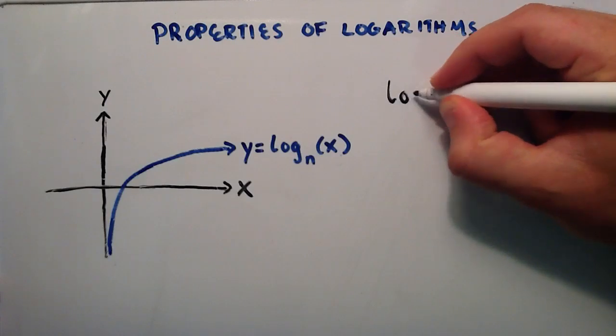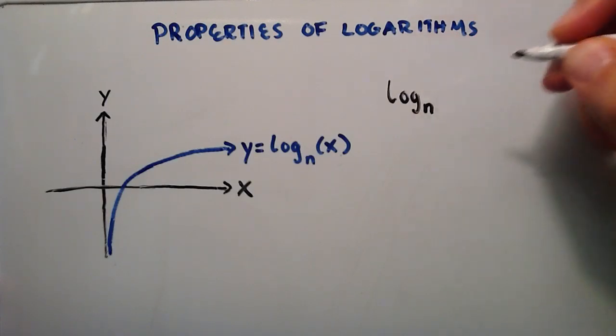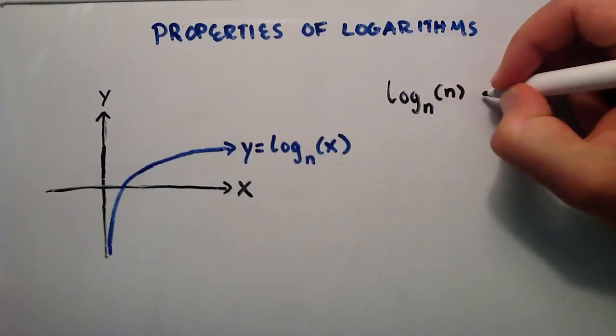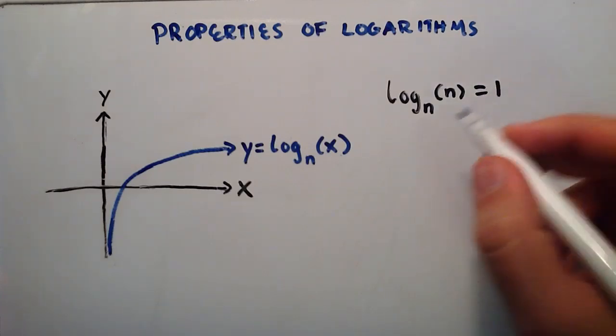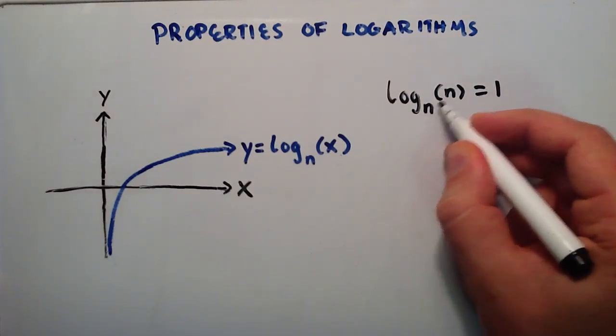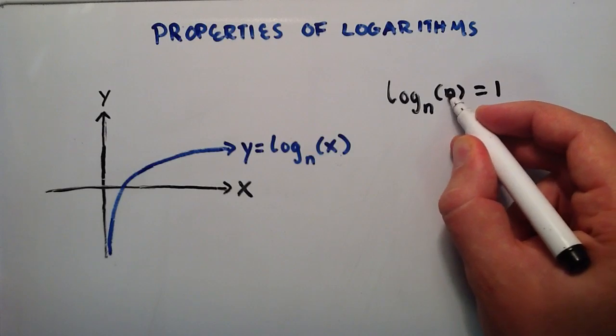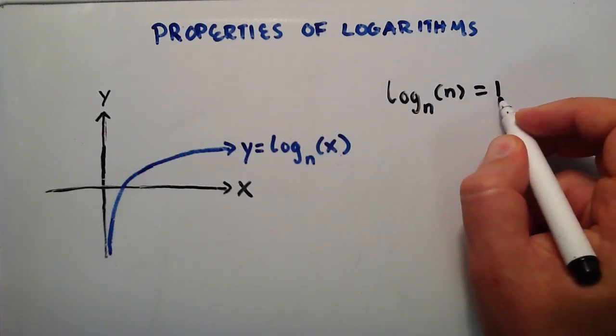You have logarithm base n of n is equal to 1. So anytime your base of your logarithm matches the value in the argument, then the answer is equal to 1.